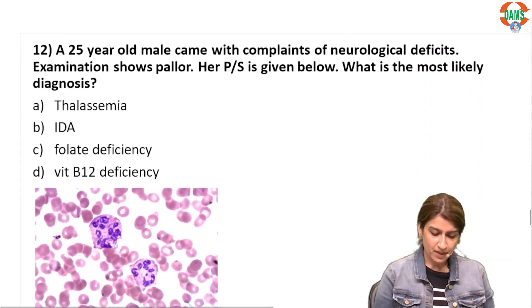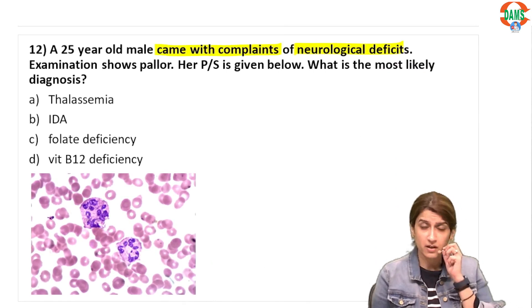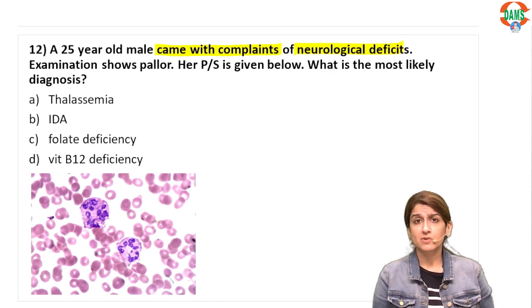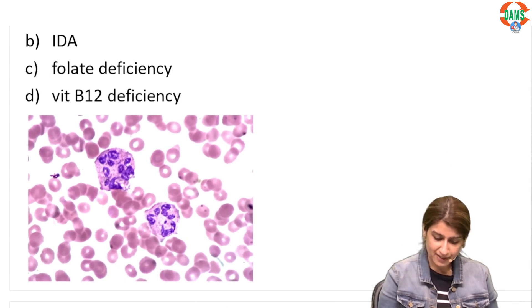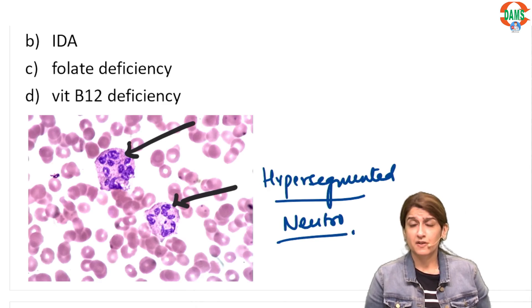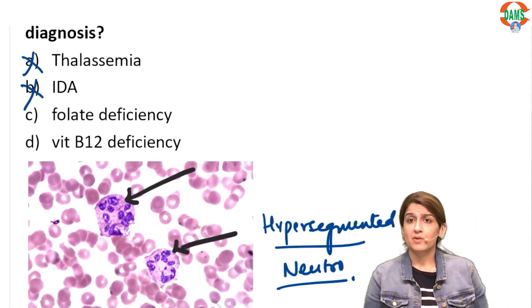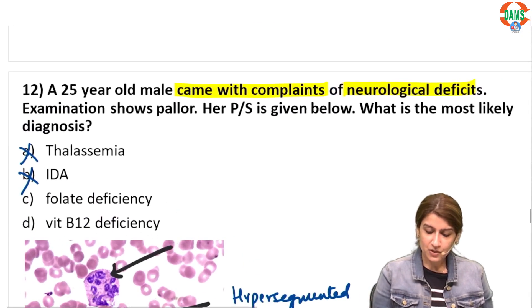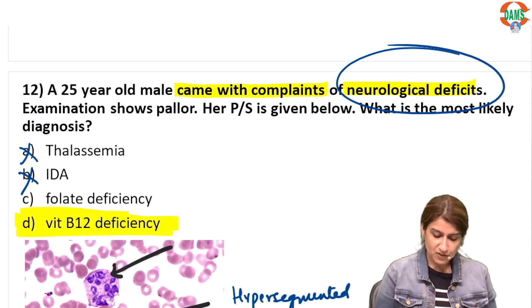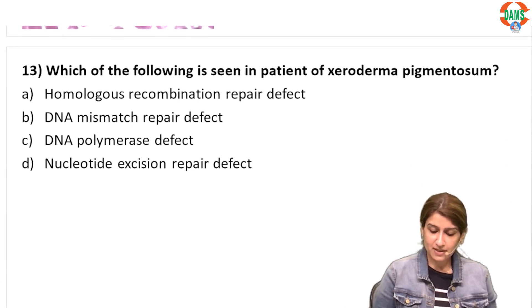A 25-year-old male presents with neurological deficits and pallor. The peripheral smear shows hypersegmented neutrophils, which are a feature of megaloblastic anemia — ruling out options A and B. Megaloblastic anemia can be due to folate deficiency or vitamin B12 deficiency, but neurological deficits are a feature of B12 deficiency and not folate deficiency. The correct answer is option D, vitamin B12 deficiency.